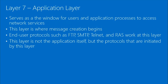Layer seven, the application layer, serves as the window for users and application processes to access network services. End-user protocols — FTP, SMTP, Telnet, and RAS — work at this layer. This shouldn't be confused with the application you're using. The mail UI you use hooks into the application layer, but the program itself isn't the application layer.